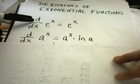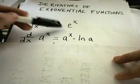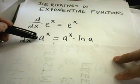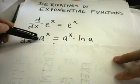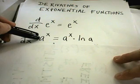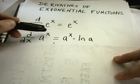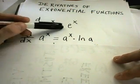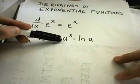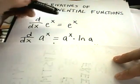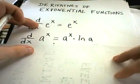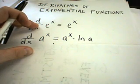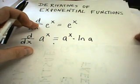The basic case: if you take the derivative of e to the x, you just get back e to the x. For a more generic exponential with some base a — recall that a must be greater than zero and not equal to one, since one to the x is just one — the derivative of a to the x is a to the x times the natural logarithm of a. This also applies to e to the x, but the natural logarithm of e is just one, so it's left off.